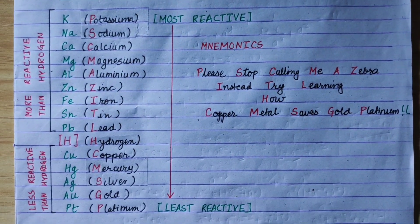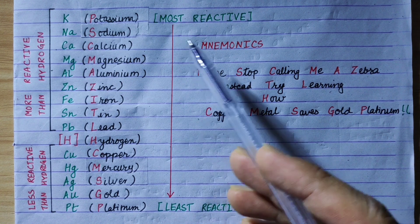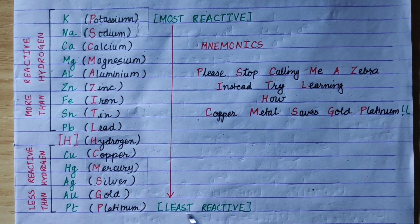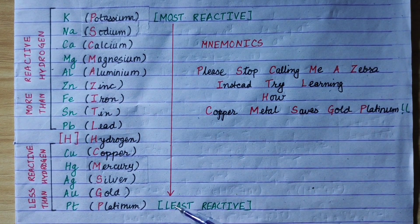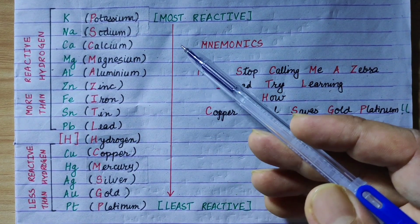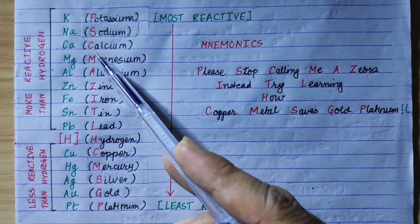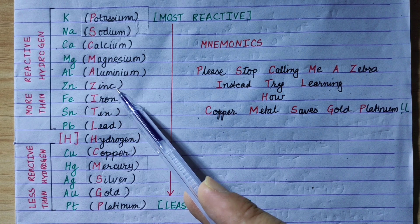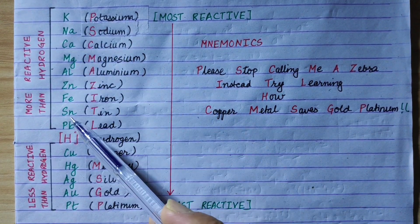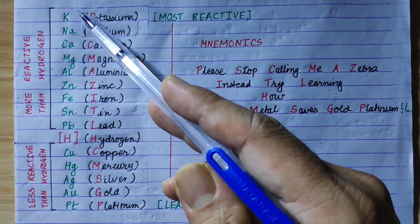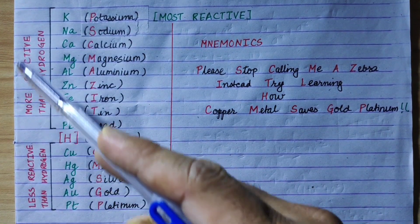This is the Metals of Reactivity series, arranged in descending order from most reactive to least reactive. The metals are: Potassium, Sodium, Calcium, Magnesium, Aluminium, Zinc, Iron, Tin, Lead. These metals are more reactive than Hydrogen.